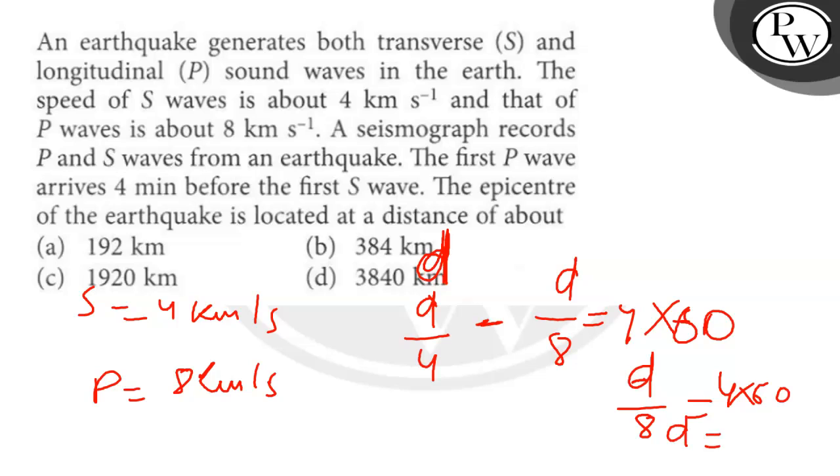So D is equal to 1920 km. Option number C is the correct answer. Thank you.